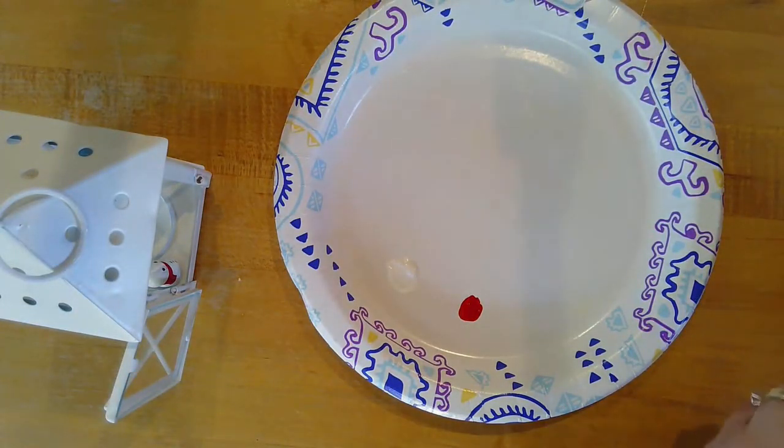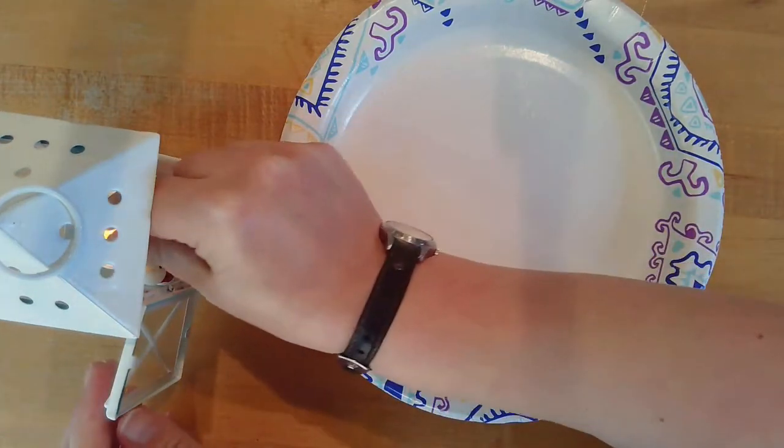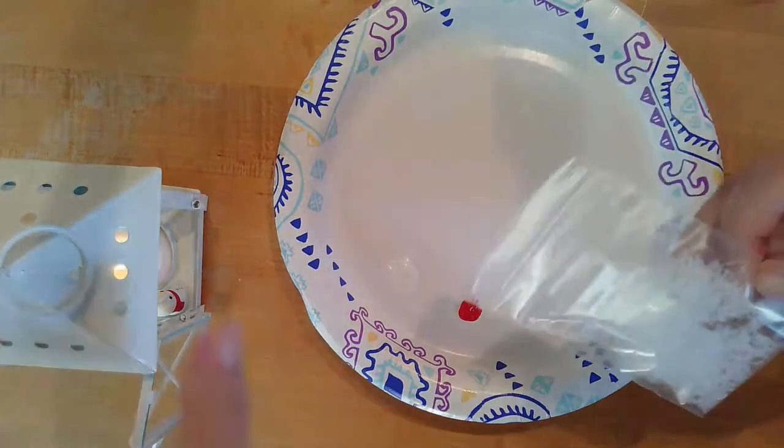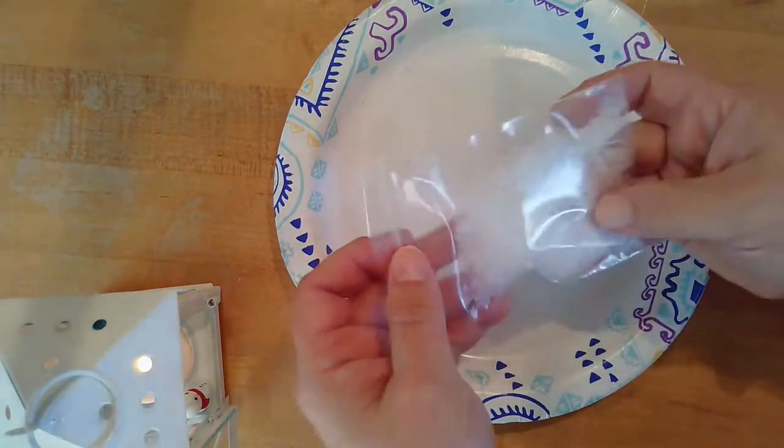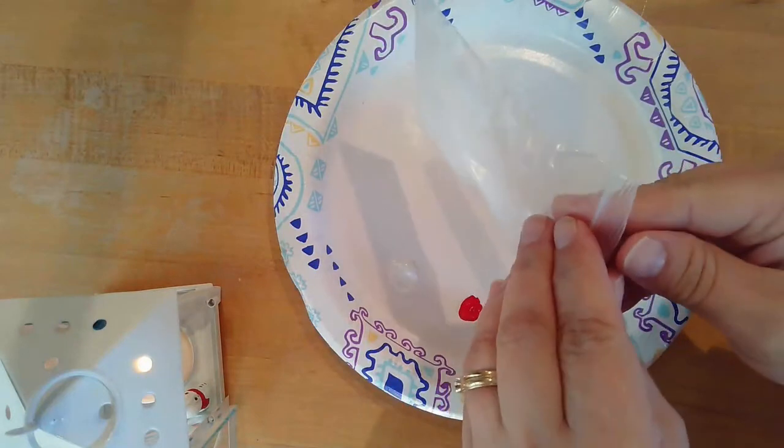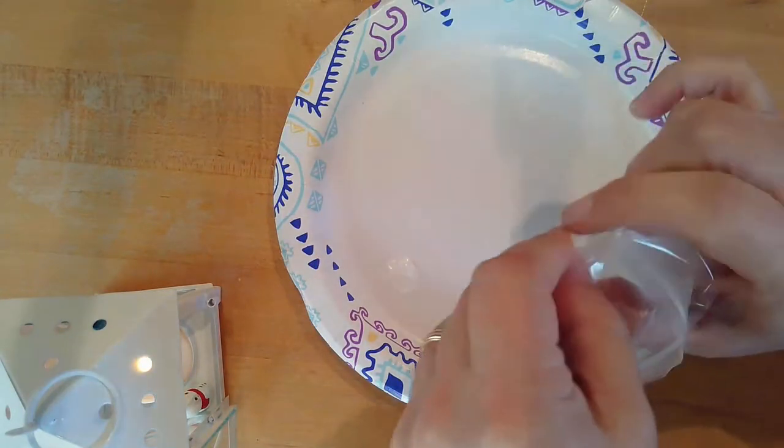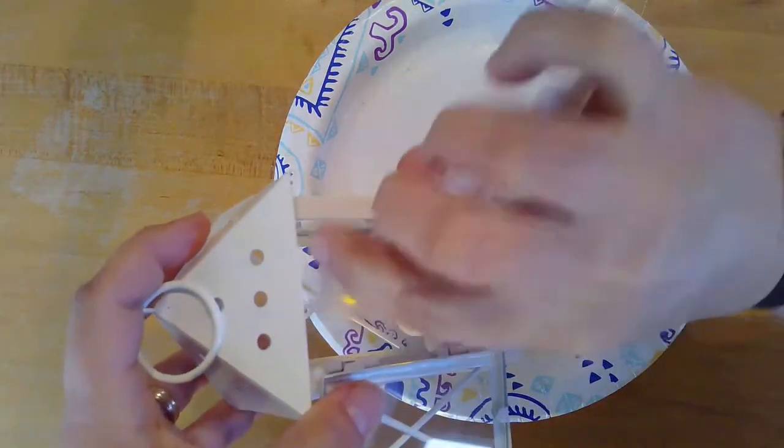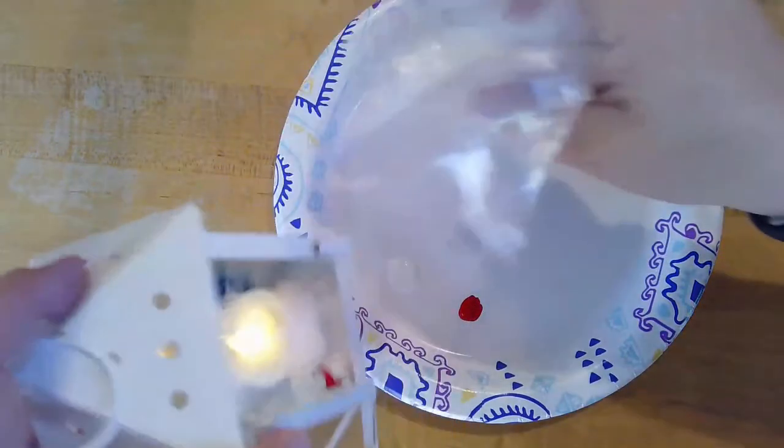At this point, you can put your LED candle in. You can see how it looks. And you can add your artificial snow. A little bit goes a long way here. And be careful opening it so it doesn't end up all over the place. And you can gently shake it in and position it around your lantern.